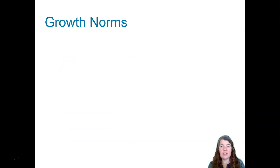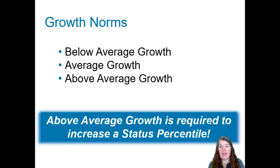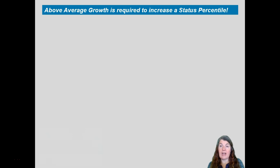In addition to status norms, MAP has growth norms. MAP can tell us whether a child is growing at a below average rate, an average rate, or an above average rate. And why does this matter? Above average growth is required to increase a status percentile.